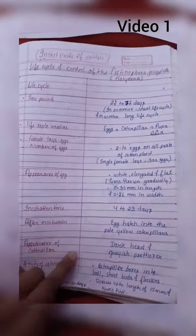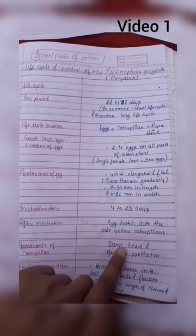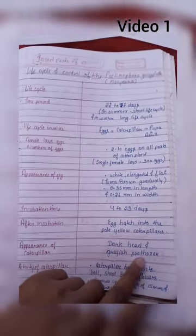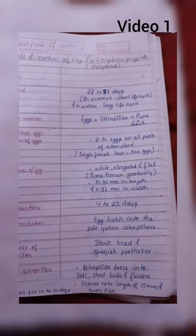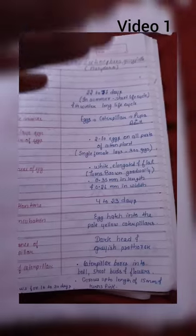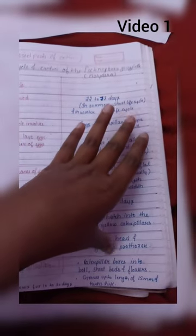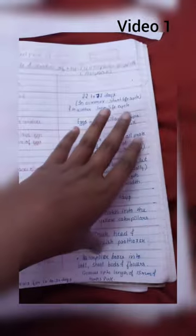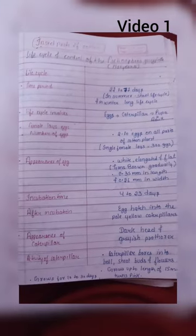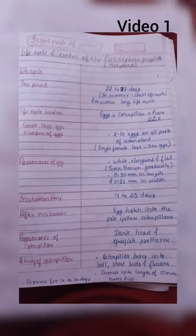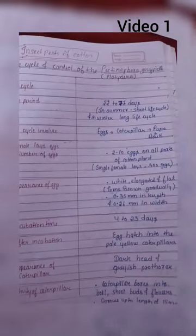Caterpillar appearance - its dark head and prothorax are greyish color. Activity of caterpillar - the caterpillar bores into boll, shoot, birds, and flowers. It grows up to a length of 15 mm.